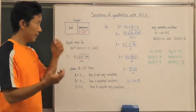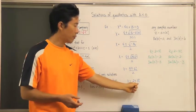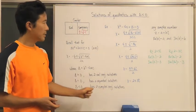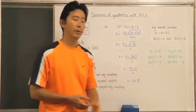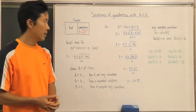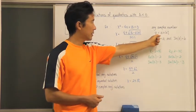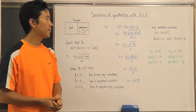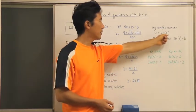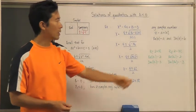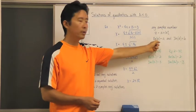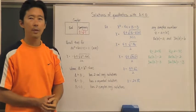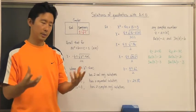Let's look more closely at the form we get when the discriminant is less than zero. Any complex number — we typically use the letter z — is written as a plus b i, where the real part of z equals a and the imaginary part of z equals b.